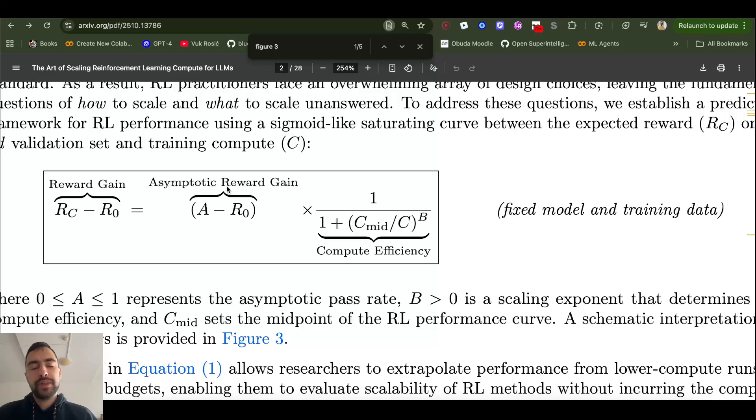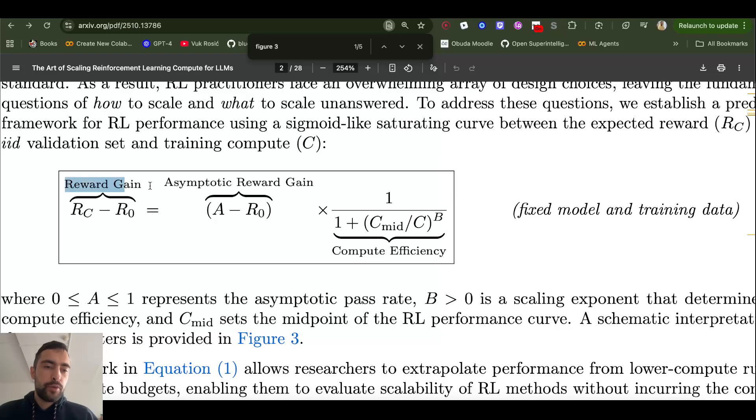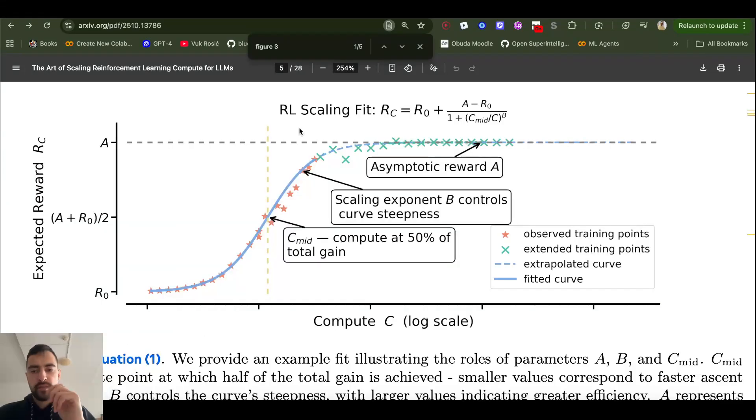This is the formula to calculate performance. It's actually very simple. So reward gain is asymptotic reward gain times compute efficiency. First of all, there is this asymptotic reward or this ceiling. And no matter how much compute you put, it will never cross this maximum possible reward, maximum possible performance. So you see here it starts to approach the ceiling and never crosses it. And they call this asymptotic reward here. And different methods have different ceilings. So you'll see later that they will tell you which methods have higher ceiling and which ones you should use.